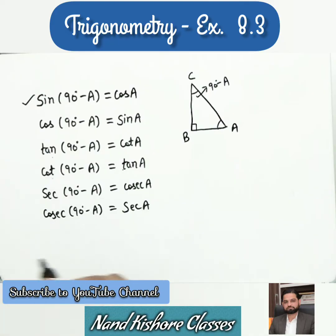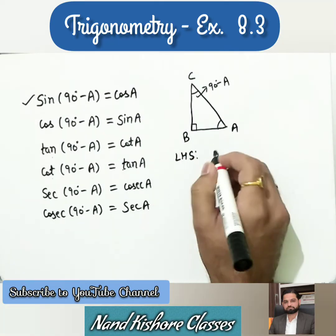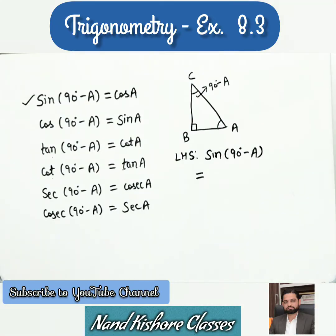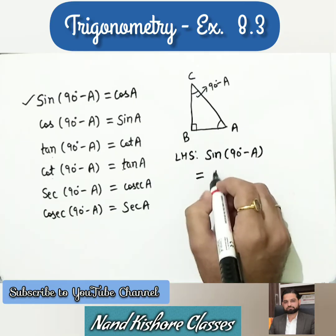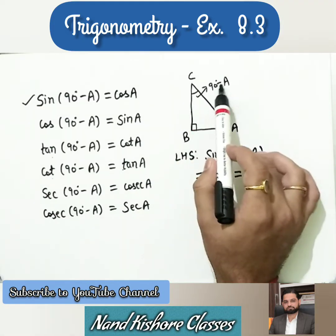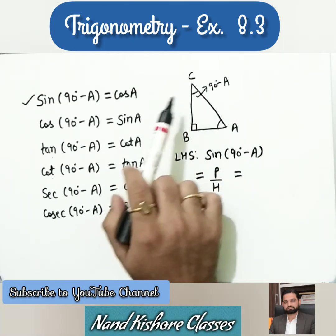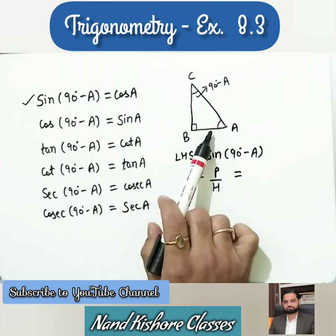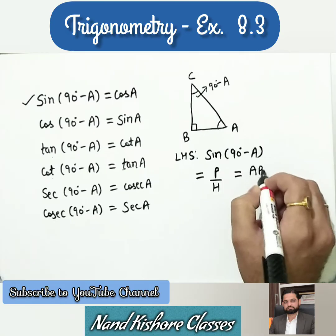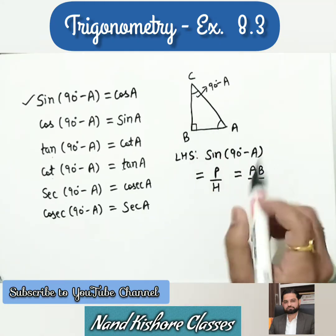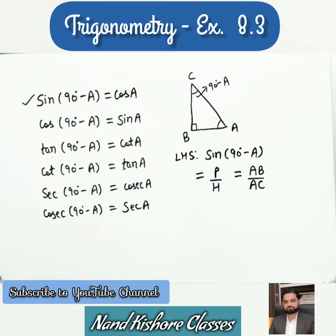Now I am going to prove the first part. Taking the left side: sin(90 - A). Sin of any angle = perpendicular over hypotenuse. Since 90 - A refers to angle C, the perpendicular is AB and the hypotenuse (opposite to 90 degrees at B) is AC. So the left side gives AB over AC.